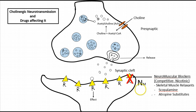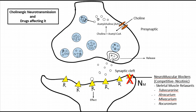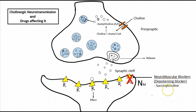A completely different class of drugs inhibits nicotinic receptors at the neuromuscular junction; these are called neuromuscular blockers or skeletal muscle relaxants. Examples include tubocurarine, atracurium, mivacurium, and rocuronium. Succinylcholine is a depolarizing blocker with a structure similar to acetylcholine; it causes excessive depolarization of receptors, leading to muscle relaxation.